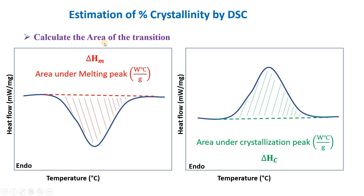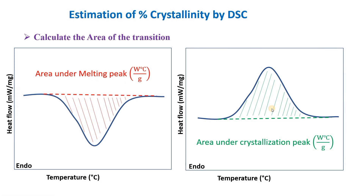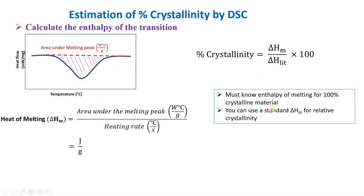The first step to calculate percentage crystallinity by DSC is to calculate the area of the transition. If we have a melting curve, we calculate the area of the melting peak; if we have a crystalline peak, we calculate the area of the crystalline peak. The next step is to calculate the enthalpy of transition. For a melting curve, we divide the area of the melting peak by the heating rate used during DSC.